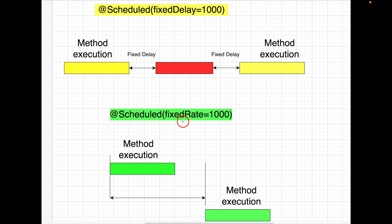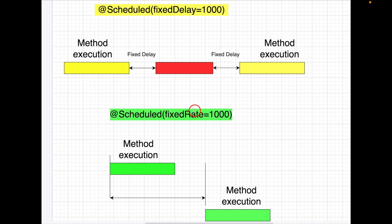Now for fixedRate: inside the @Scheduled annotation, fixedRate is used in situations where method executions are independent. It does not wait for the previous one to complete. Whatever time is given as fixedRate — say 1000 milliseconds — after that time it will start the next execution without waiting for the previous one to finish. In contrast, fixedDelay waits for the previous execution to complete. So fixedDelay guarantees executions happen in sequence.